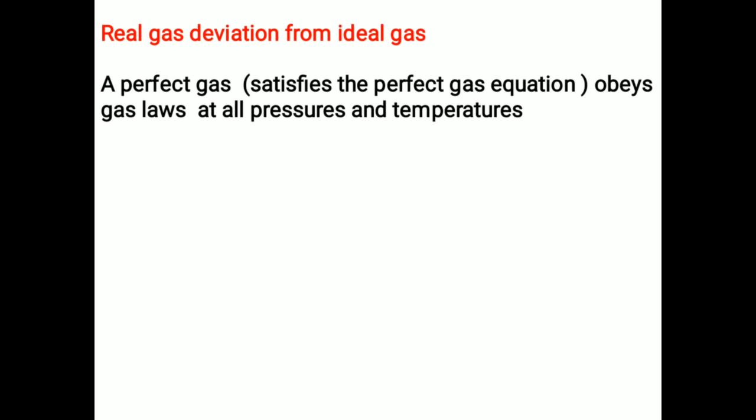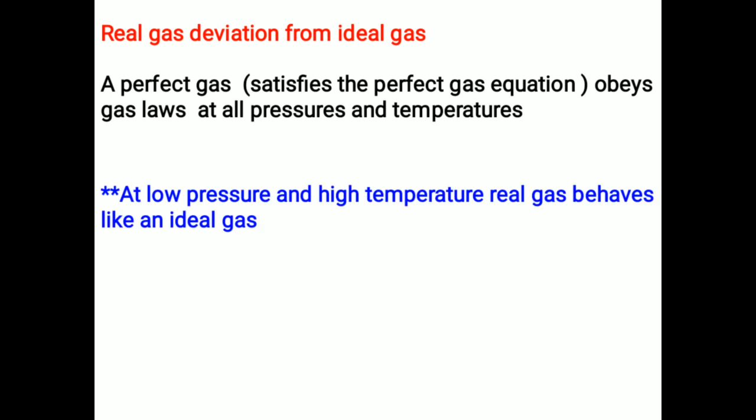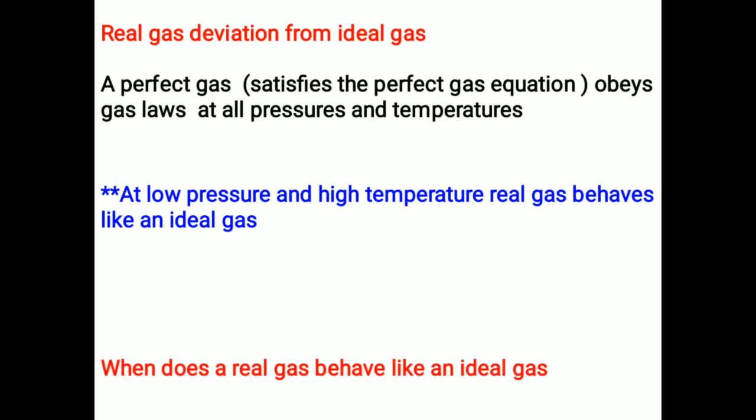Real gas deviations from ideal gas. A perfect gas satisfies the perfect gas equation PV equals nRT and obeys gas laws such as Boyle's law and Charles' law at all pressures and temperatures. But for a real gas, at low pressure and high temperature, a real gas behaves like an ideal gas.